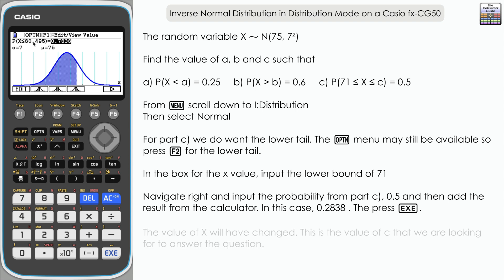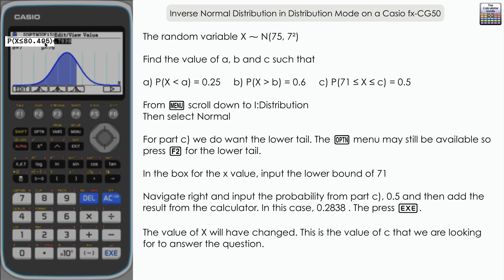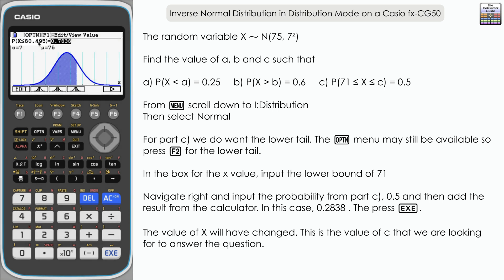If you can imagine finding this value, this probability of 0.7838, and taking off the region that was below 71—0.2838—then the region in between that you're left with is 0.5, which is exactly what we were looking for.